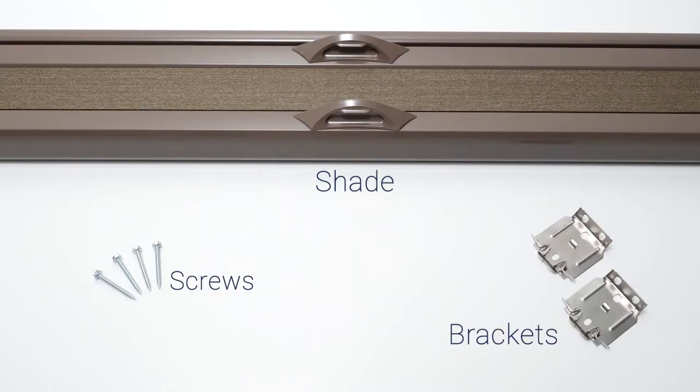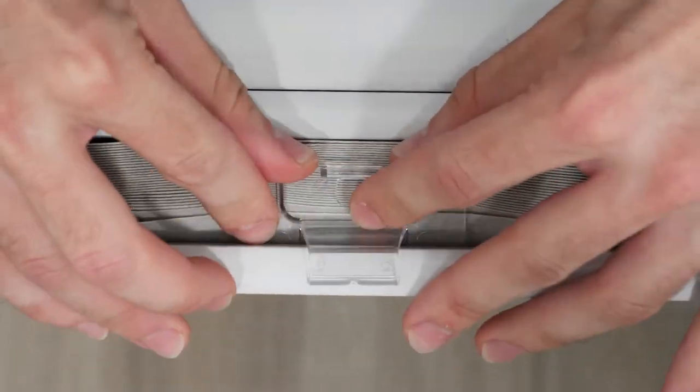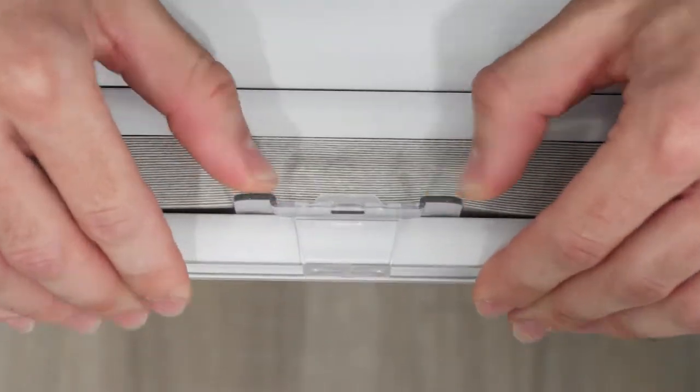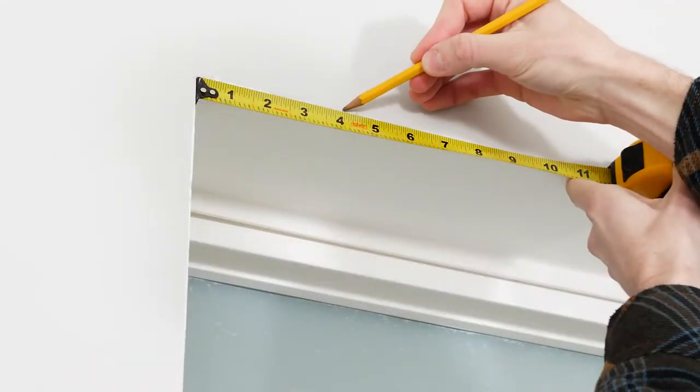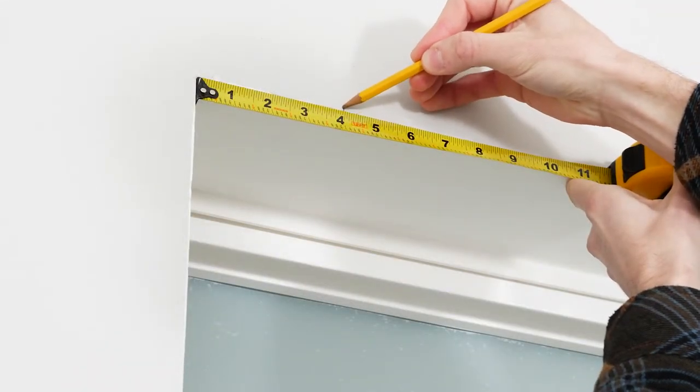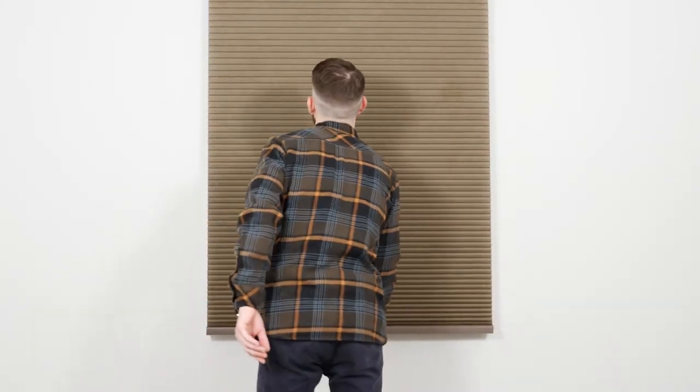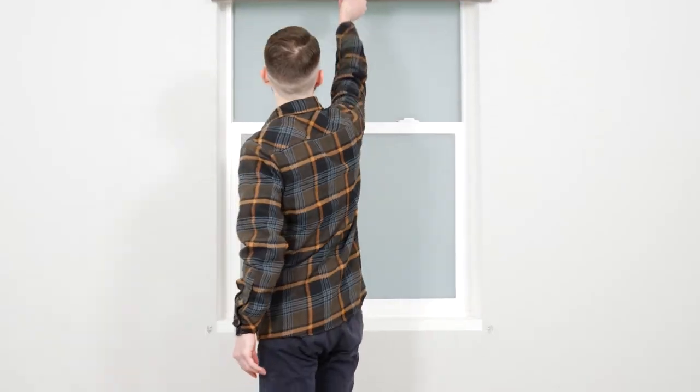Today, I'm using a cordless cellular shade with a built-in handle. Depending on the type of shade you ordered, the pieces or parts you have may be a little different. That's okay. You'll follow basically the same steps I'll go through here to hang them, but be sure to check the instructions that came with your product before you start.